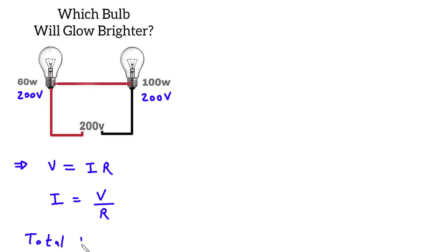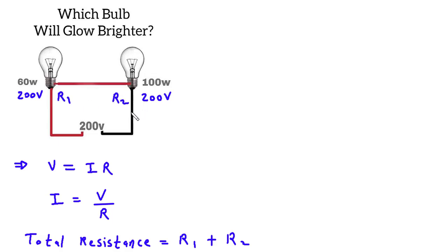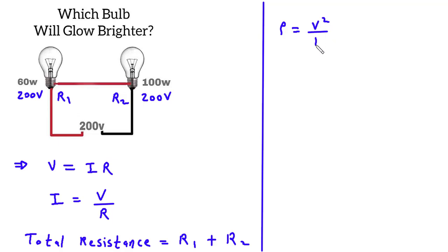Total resistance is equal to R1 plus R2. The formula for finding the resistance is: power is equal to V squared upon R. Now we can rearrange this, so R is equal to V squared upon P.